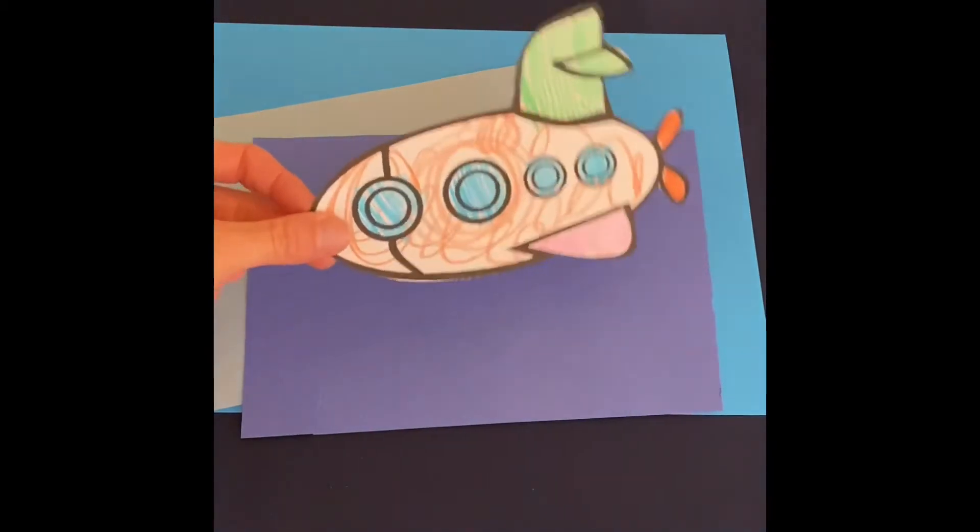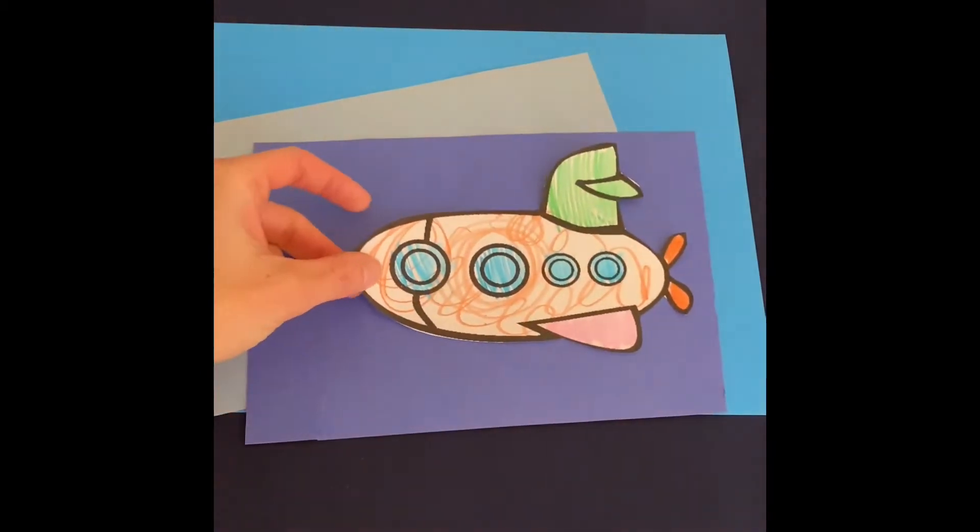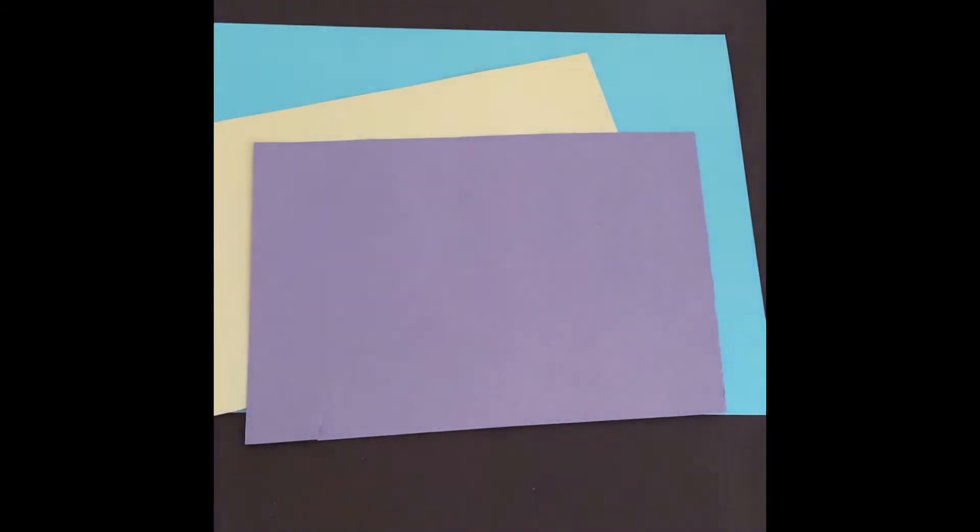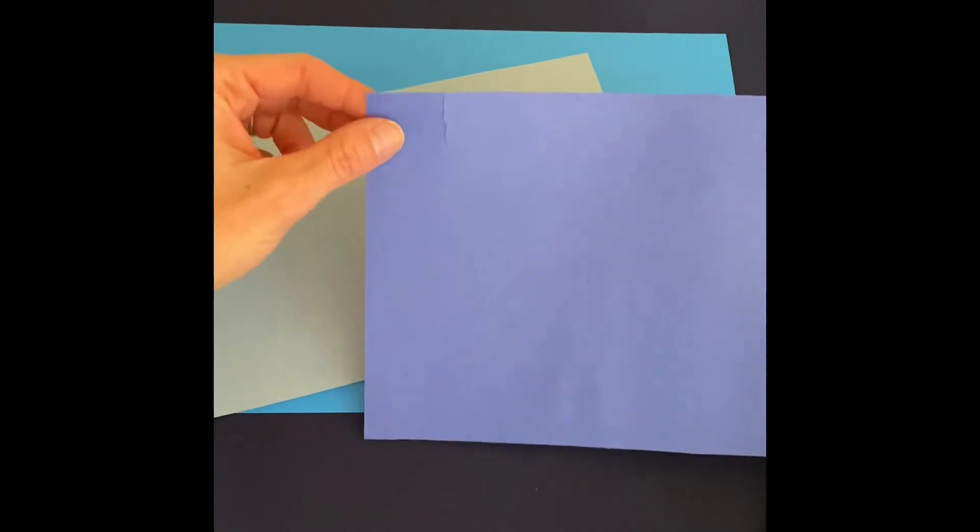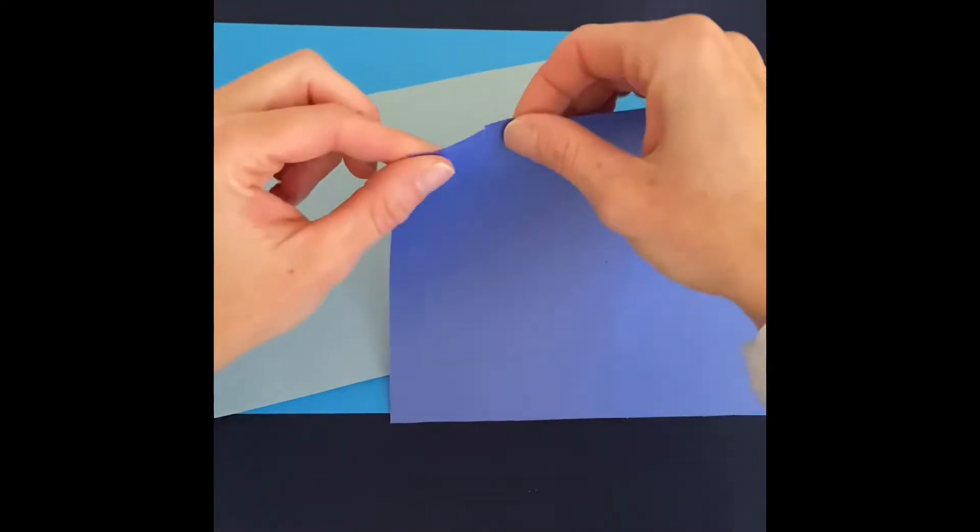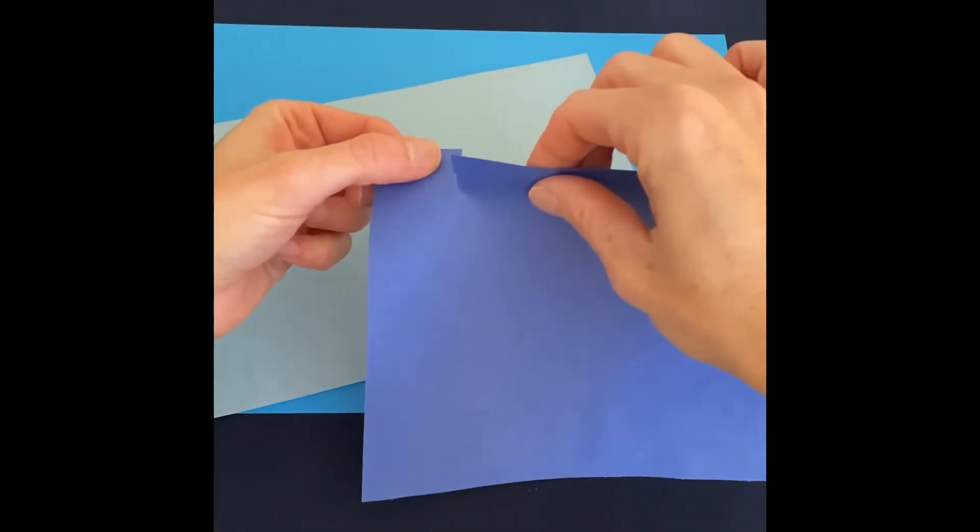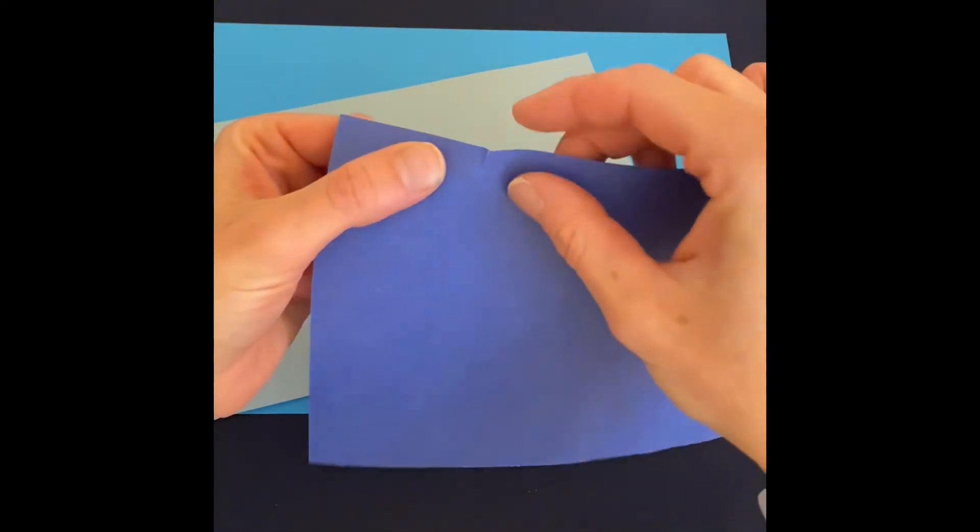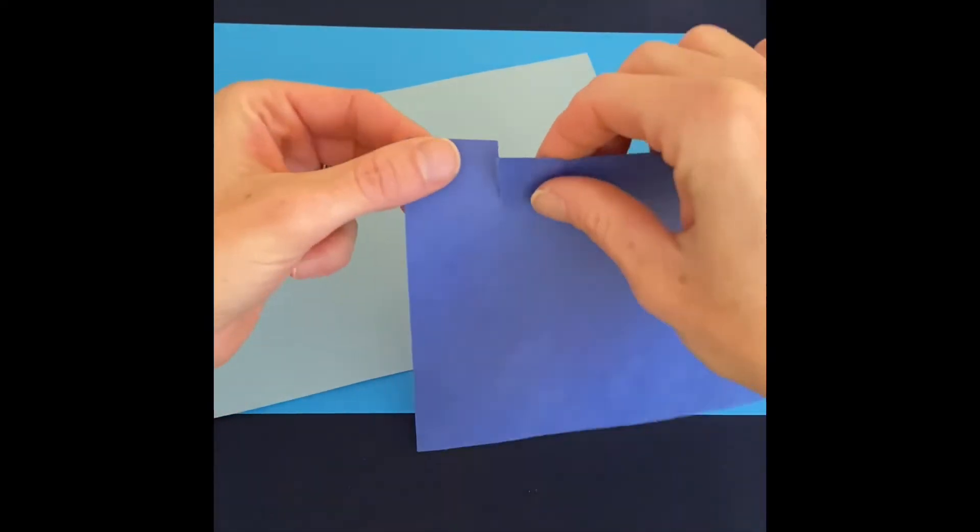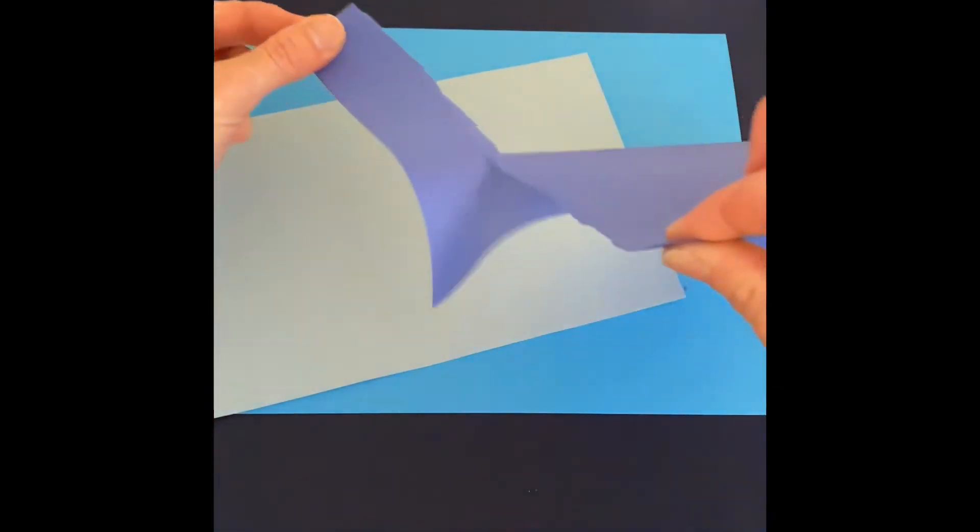I've got my submarine all done and now we need some ocean for it to drive around in. This part is a lot of fun. All they're going to do is they get to tear some paper, which most toddlers really enjoy doing. You might get started with just a little tip for them if they need some help, and then they can just rip.